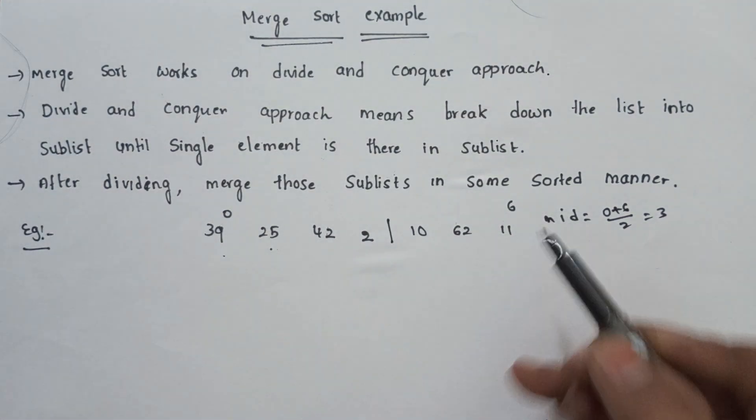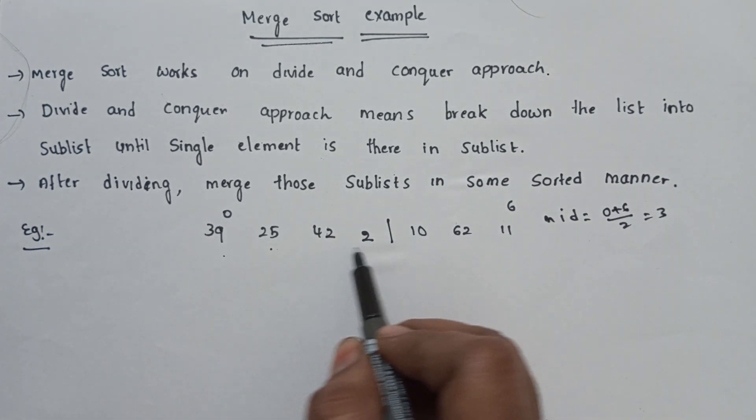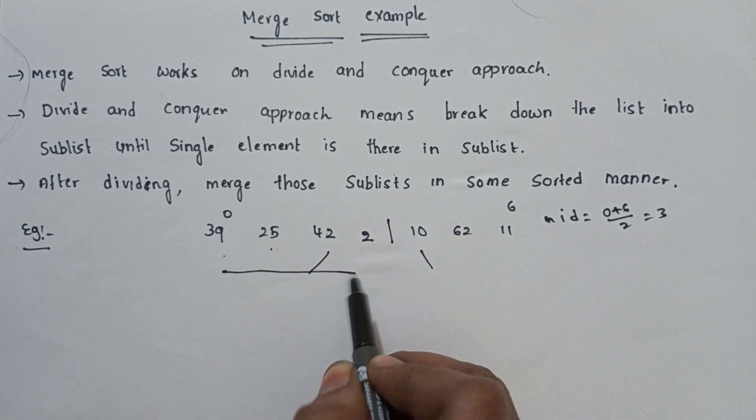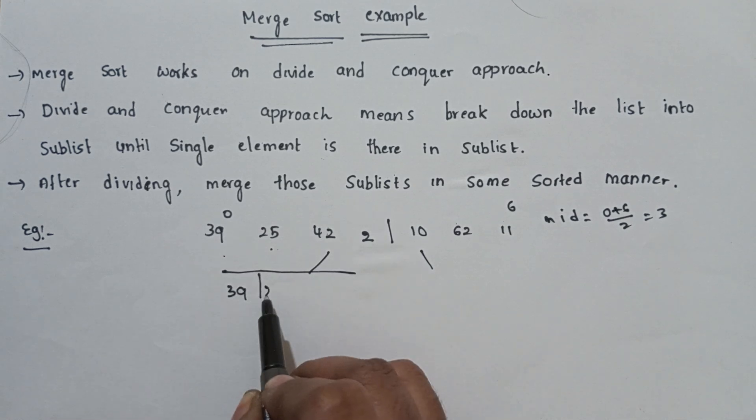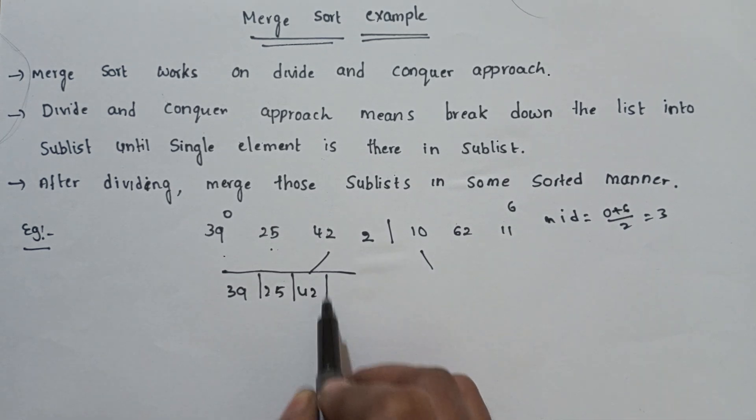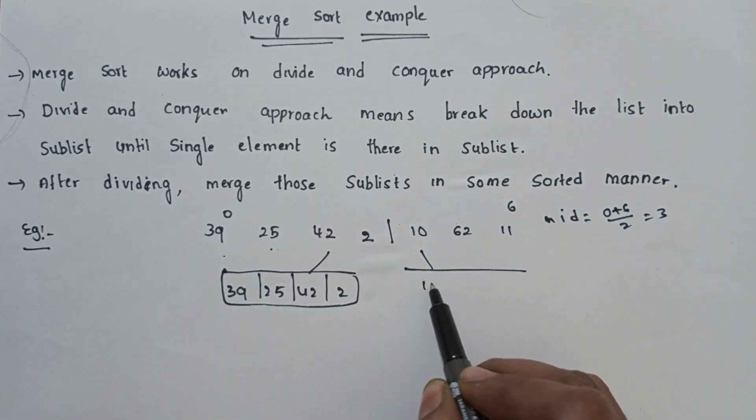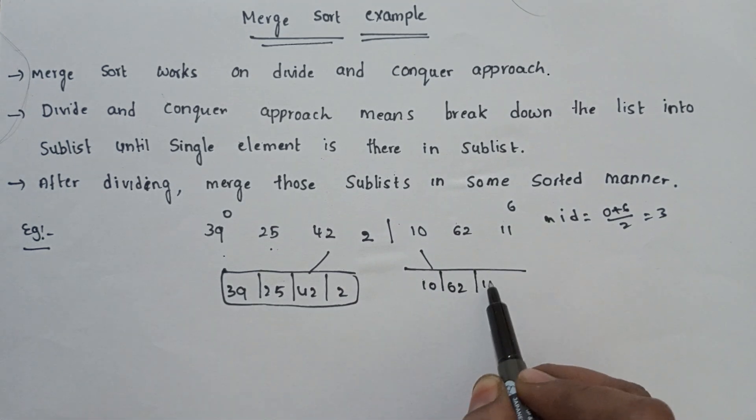Now we divide at the midpoint. The total list is divided into 2. Second list is 10, 6, 2, 11.